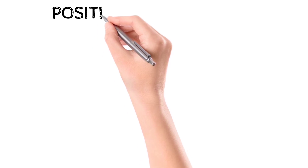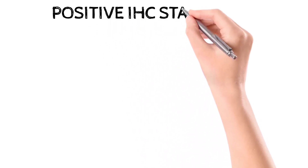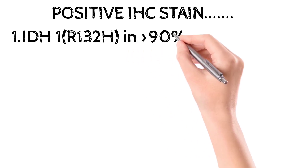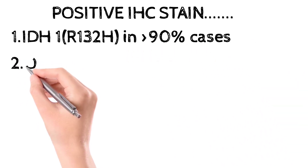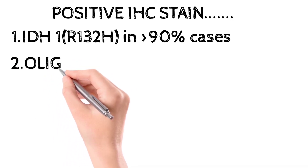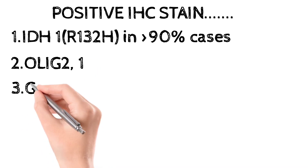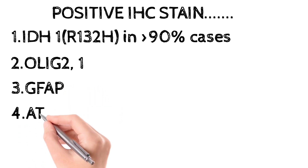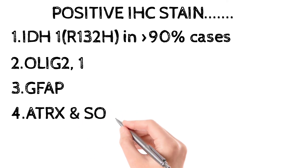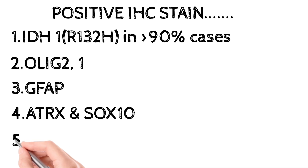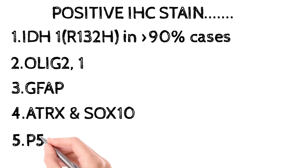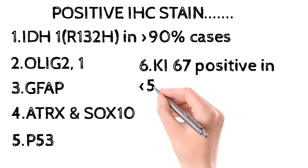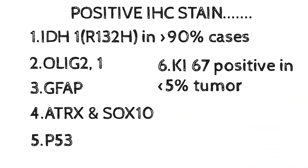Positive IHC stains for oligodendroglioma include: IDH1 mutation — particularly R132H — positive in greater than 90% of cases; OLIG1 and OLIG2 are positive; GFAP is also positive; ATRX and SOX10 markers are positive; p53 is positive; and Ki-67 is positive in less than five percent of cells.